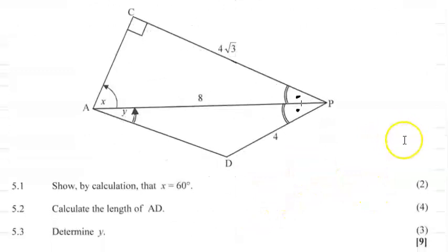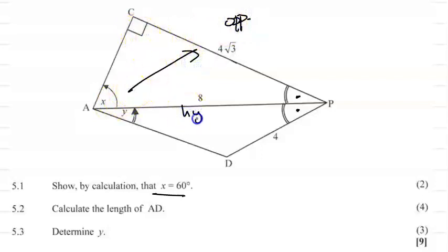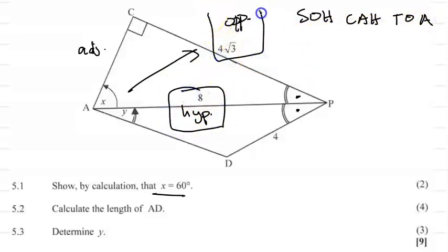The first question asks us to show by calculation that x equals 60 degrees. Now, x lies in right angle triangle ACP. With x as the reference angle, the opposite side is 4√3, the hypotenuse is AP = 8, and the remaining side is the adjacent. Using SOH CAH TOA, since we have opposite and hypotenuse, we use sine.